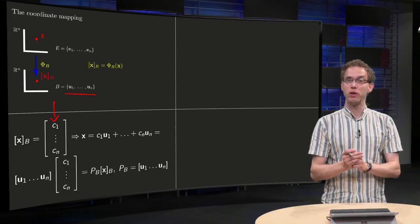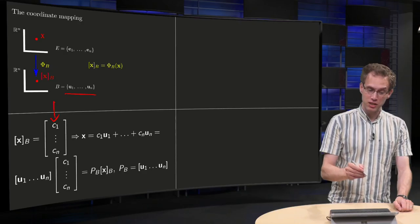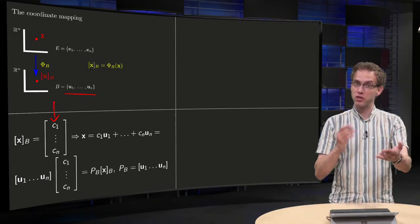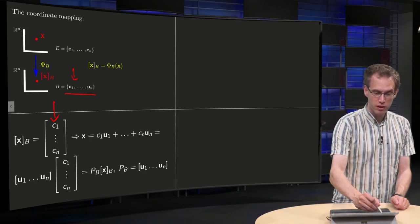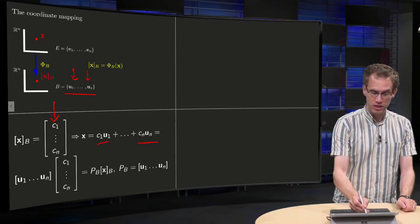Well, we don't know c1 up to cn, but that doesn't matter. Then we can compute x, because we know that c1 up to cn are the weights with respect to the basis B, u1 up to un, so our x will be c1*u1 plus c2*u2 plus c3*u3 up to cn*un.